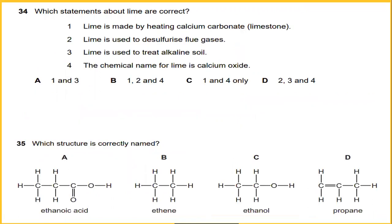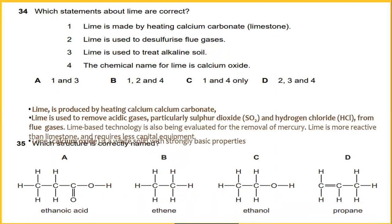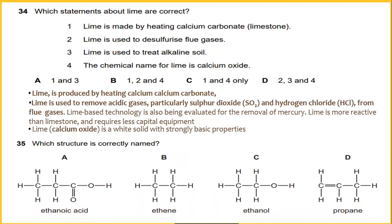Which statement about lime are correct? Lime is produced by heating calcium carbonate, which is number one. Lime is used to remove acidic gases, particularly sulfur dioxide and hydrogen chloride from flue gases. Lime is more reactive than limestone and require less capital equipment. And lime or calcium oxide is white solid with strong alkaline properties. So I would say step 1, 2, and 4. So this is the explanation why we choose 1, 2, and 4.